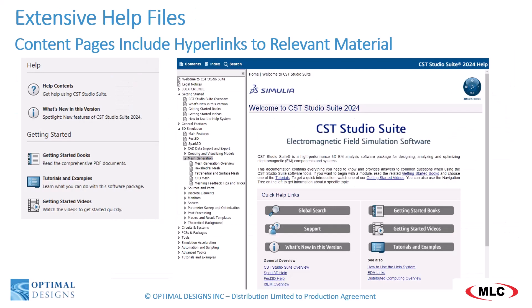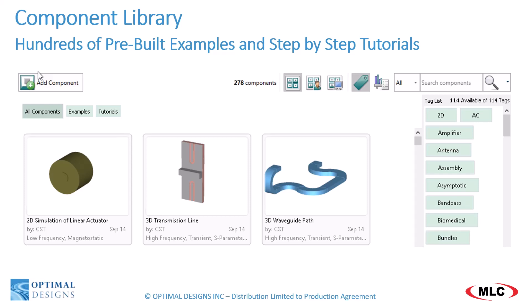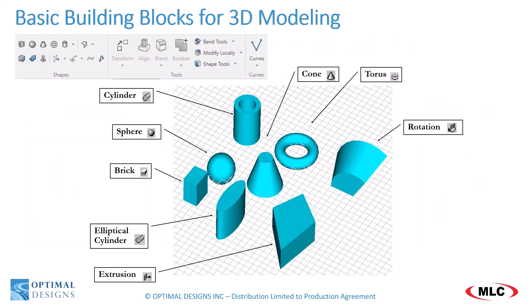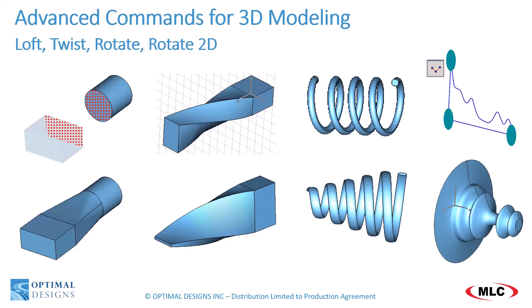The embedded help files are both expansive and easy to navigate with hyperlinks to relevant material. You can find information ranging from mathematical explanation of solvers to resolving an operation question. The component library includes over 500 pre-built models and over 50 tutorials for step-by-step model creation. CST does include an advanced 3D modeler with standard primitives as well as sophisticated geometry commands, including loft, twist, spiral, and arbitrary 2D rotation.